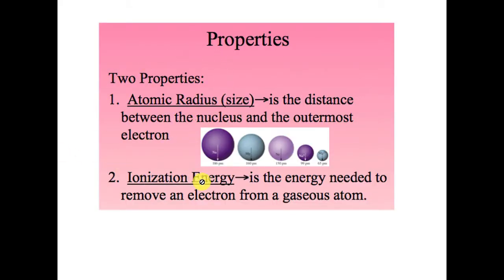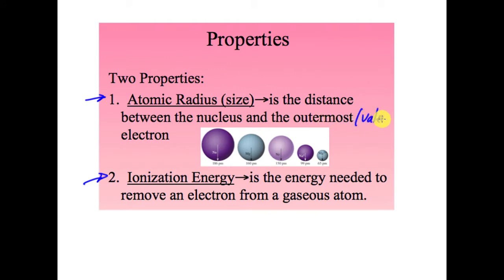The first property is atomic radius, which is simply the size of the atom. The radius is the distance from the nucleus to the outermost electron — the valence electrons. There's a lot of debate about exact atomic sizes, so we'll use rounded rough numbers. We can conclude that sodium is a lot bigger than magnesium, and neon is a lot smaller than sodium.